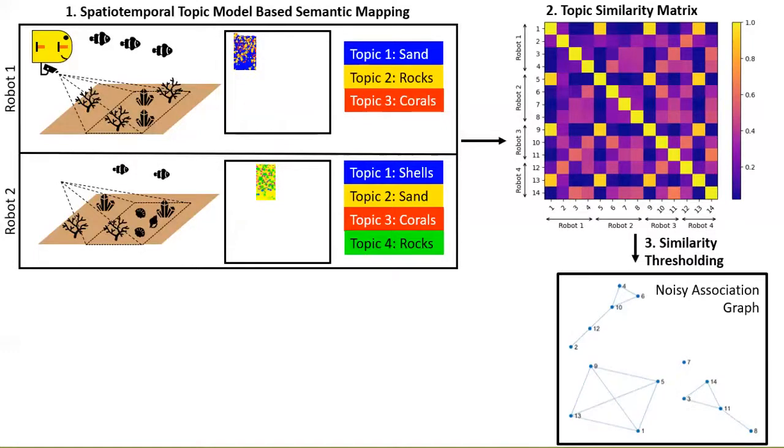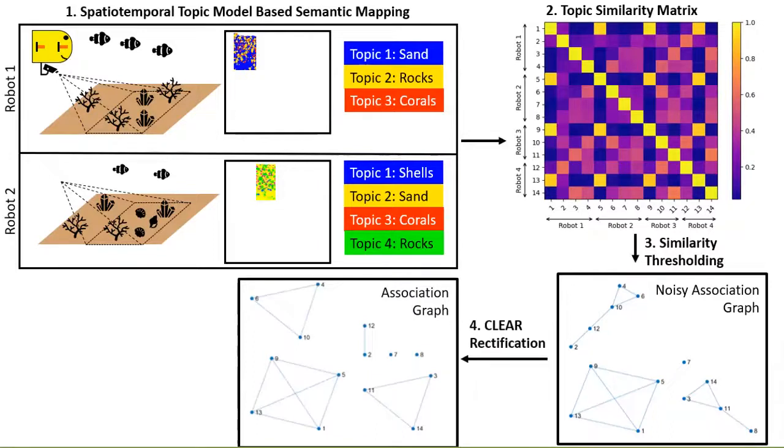This graph contains inconsistencies. For example, topics two and four are in the same subgraph, even though they are very dissimilar. The central node uses a multi-way matching algorithm called CLEAR to rectify these inconsistencies, producing a consistent set of matches in the form of a cluster graph.